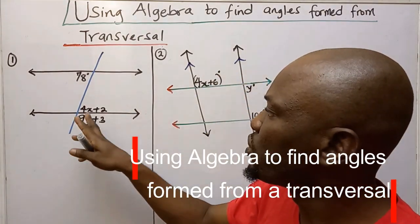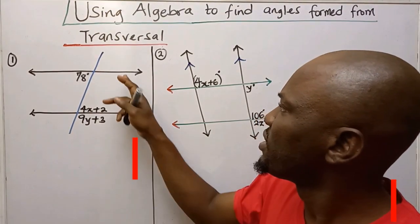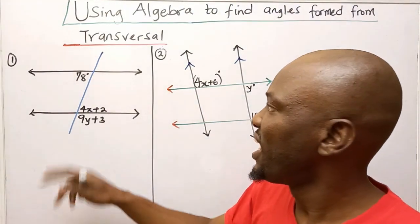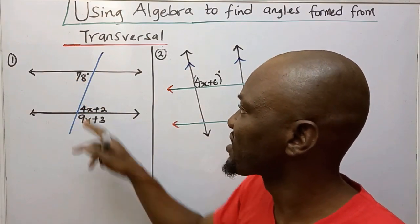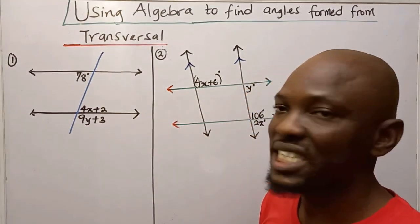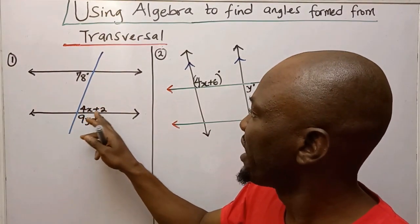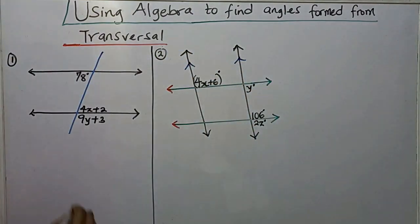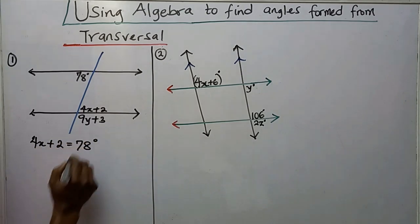We want to find the angles marked X and Y for the first problem. These lines are parallel and this is a transversal. If you look at the angles on opposite sides of the transversal, the relationship is alternate interior angles — they are congruent. So 4X plus 2 equals 78 degrees.